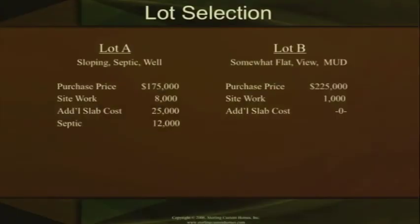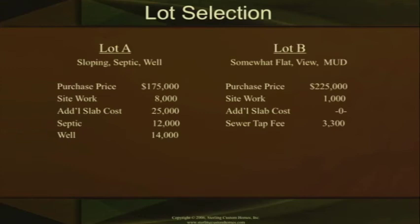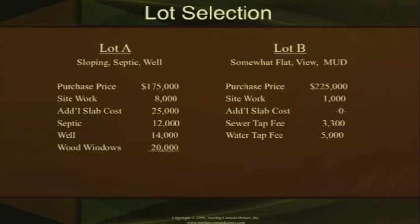The septic system for lot A is going to cost $12,000. On lot B you go to the sewer, and the sewer tap fee is $3,300. The well on lot A is $14,000, including the equipment, softener, and softening system to purify the water. Lot B is in a mud district, so the water and tap fees are all set up at $5,000. On lot A, the POA requires wood windows, which is an additional cost. Lot B is outside that restriction and doesn't require wood windows, so there's no additional cost there.